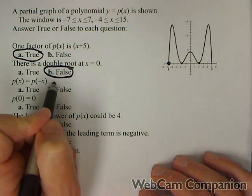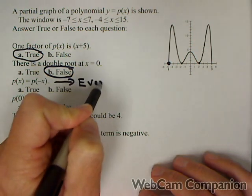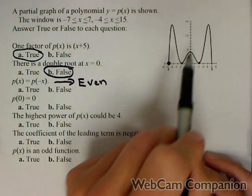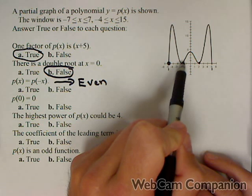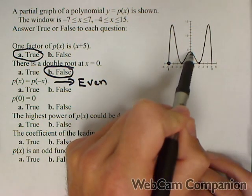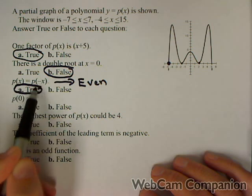p(x) equals p(-x). Now that is implying that we have an even function. Even functions are symmetric about the y-axis. In other words, if you flipped it over the y-axis, it'd look exactly the same. Well, notice this is a mirror image of this, so we have an even function, so that has to be true.